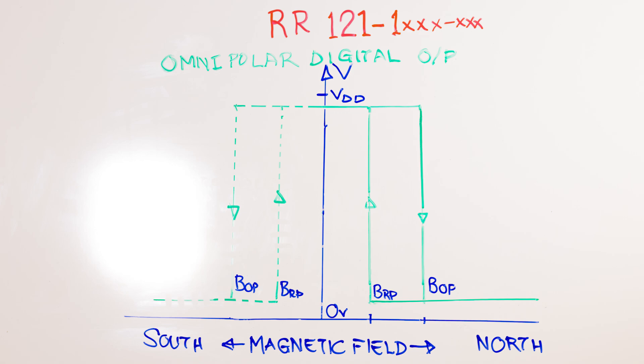Let's consider a magnet approaching the sensor and let's say it is a north pole of the magnet approaching the sensor. The field strength starts increasing. What we see here is the output remains at a digital high until a point BOP or the operate point of the sensor, which corresponds to a certain distance between the magnet and the sensor. At that point, the output from the sensor switches from a digital high to a digital low. We say the sensor has turned on.